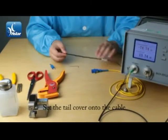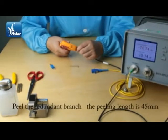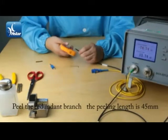Set the tail cover onto the cable. Peel the redundant branch. The peeling length is 45 mm.